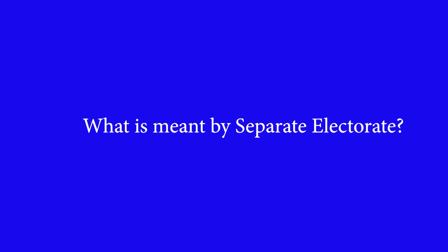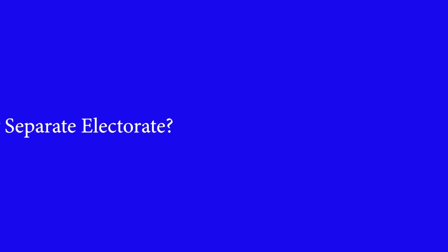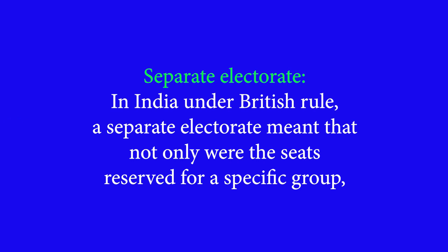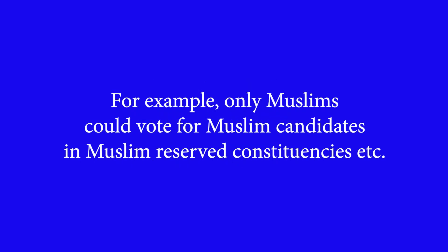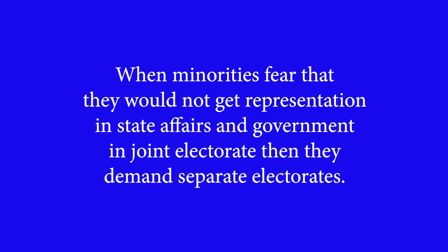What about the second term, the separate electorate? Separate electorate in India under British rule meant that not only were the seats reserved for a specific group, but voting for the reserved constituency was allowed only for members of that specific community. For example, only Muslims could vote for a Muslim candidate in a Muslim reserved constituency. It is generally believed that when minorities fear they would not get representation in joint electorate, they demand separate electorates.